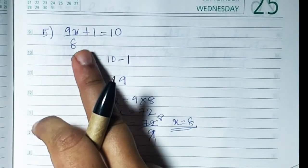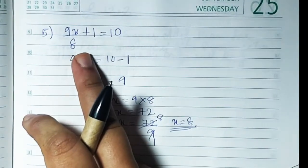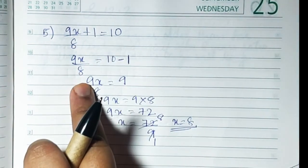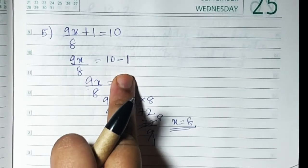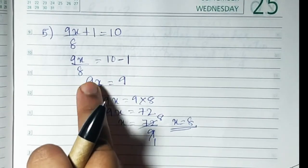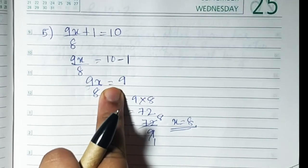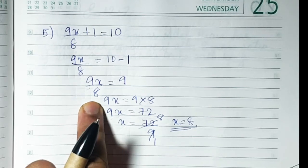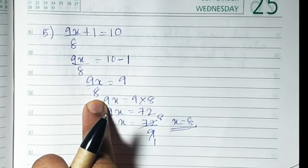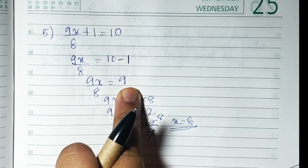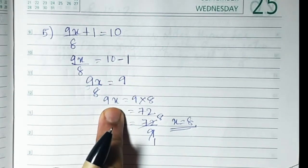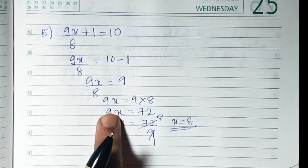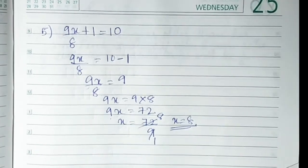Let me explain sum 5 again: 9x upon 8 plus 1 equals 10. The plus 1 crosses to the other side and becomes minus 1, giving 9x upon 8 equals 9. The 8 crosses over and becomes multiplied, so 9x equals 72. Then x equals 72 upon 9, and the value of x is 8.